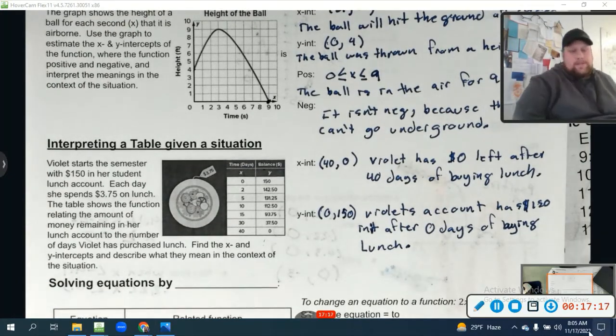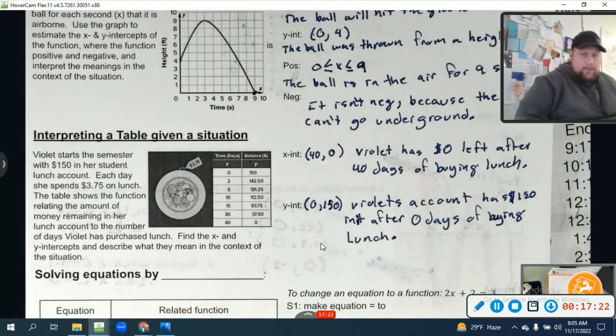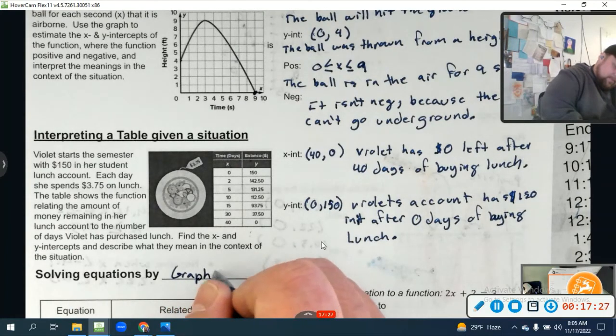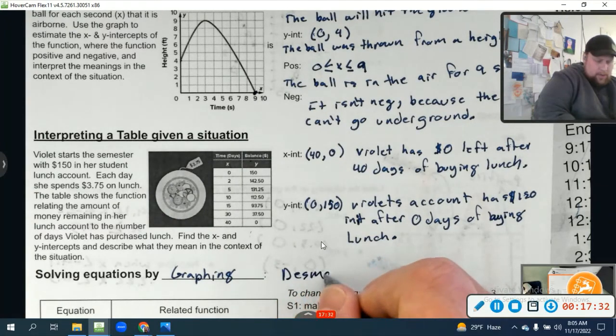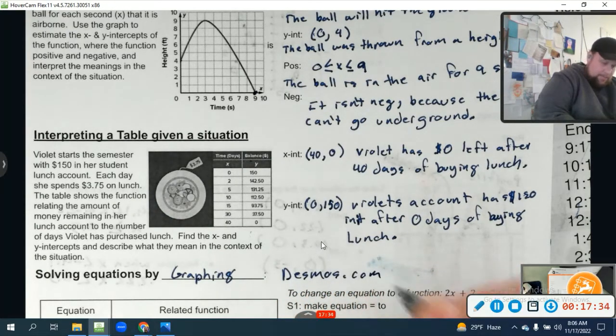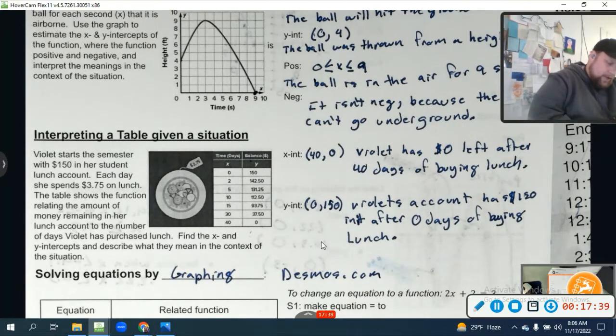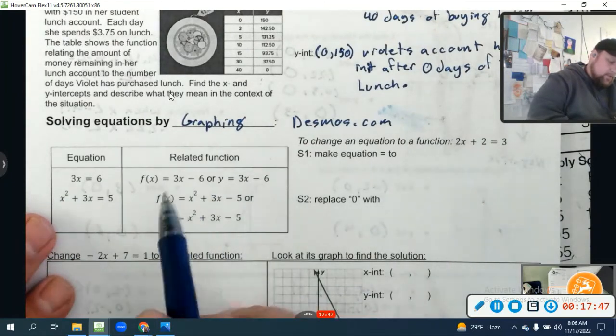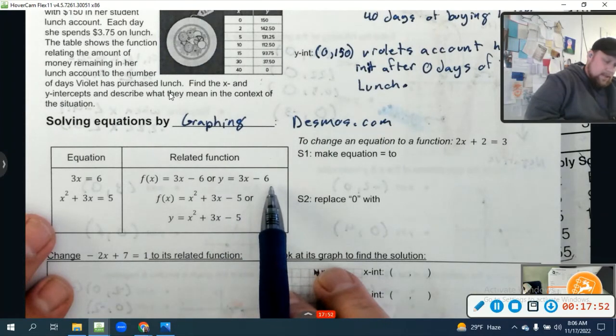Pause this and write down what you need. We're going on to solving equations by graphing, and for this you're going to want to use Desmos.com. If I start with an equation, it's related function. If the equation is 3x = 6, the related function is f(x) = 3x - 6 or y = 3x - 6.